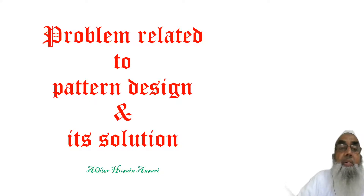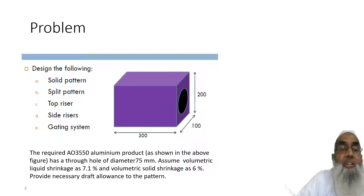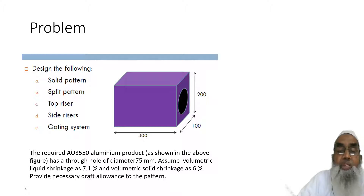We will discuss the problem related to pattern design and its solution. The problem given in the previous lecture is to design a solid pattern, split pattern, top riser, side riser, and gating system of an aluminum product — a lab product which has a through hole of diameter 75. To solve the problem, we assume volumetric liquid shrinkage as 7.1% and volumetric solid shrinkage as 6%, and we need to provide draft allowances to the pattern.